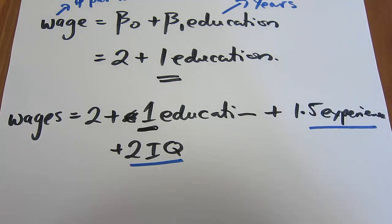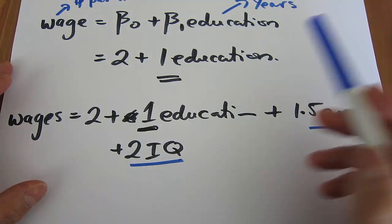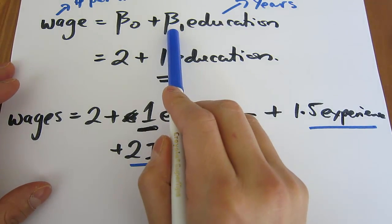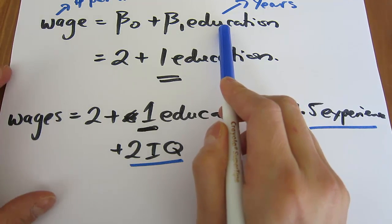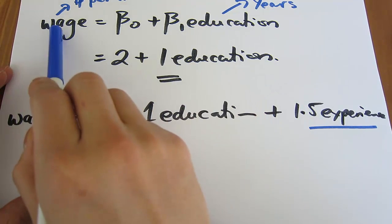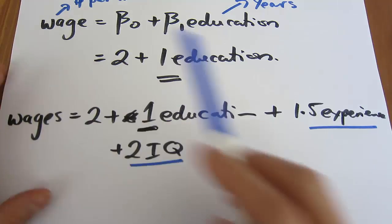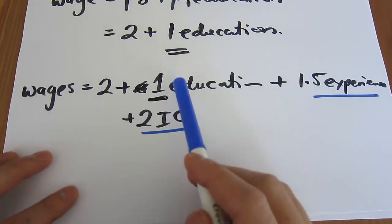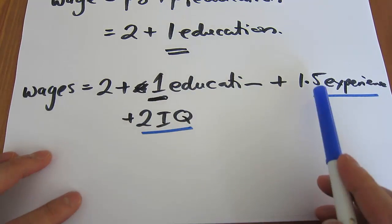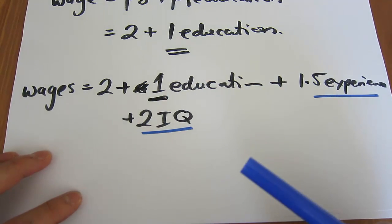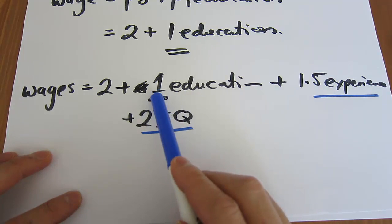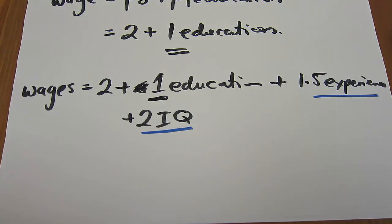In summary, it's actually very simple. In a simple regression, beta1 is interpreted as: a one unit increase in your x variable is expected to lead to a beta1 unit increase in your y variable. In a multiple regression, the interpretation is exactly the same, but it's that same effect after controlling for your other x variables. Beta1 in a multiple regression shows you the marginal impact.